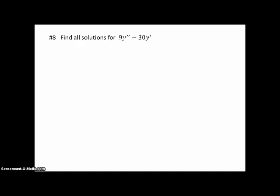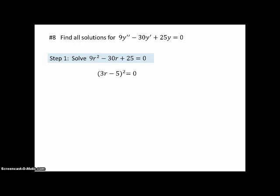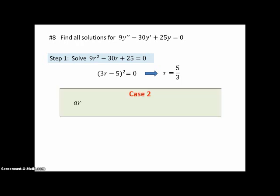Problem 8: find all solutions. Using the strategy of substituting r² and r — with y going to 1 — the quadratic factors into a perfect square, giving Case 2: one real solution r = 5/3. The general solution is y = c₁e^(5x/3) + c₂xe^(5x/3).